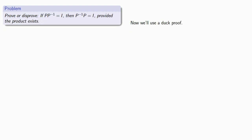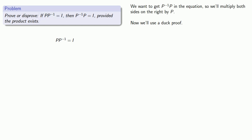Let's try to prove another property. Suppose we know that P times P inverse gives us the identity matrix. We'd like to prove, or possibly disprove, that P inverse times P also gives us the identity matrix. We do have to require that the product exists. In any proof of an if-then statement, we can start with the if claim — so we assume that P times P inverse equals the identity, and we'd like to say something about P inverse times P. We can get that by multiplying both sides on the right by P.